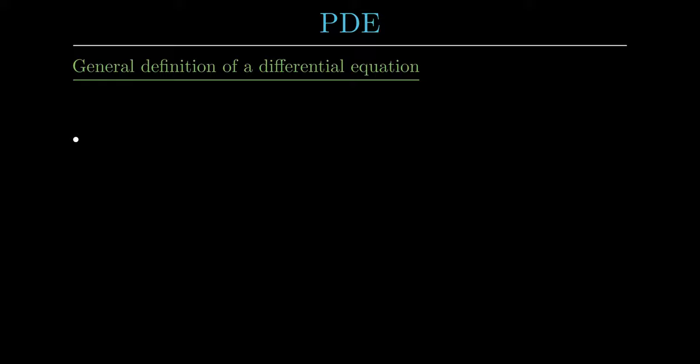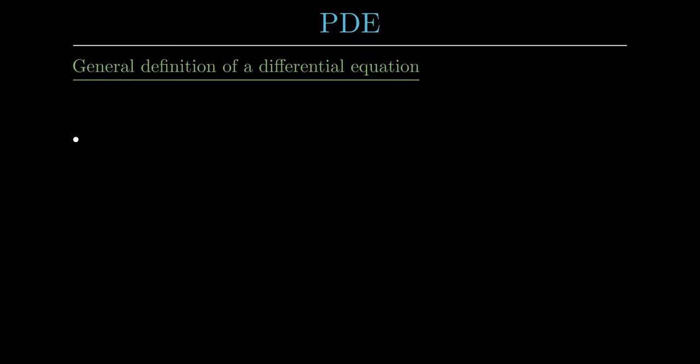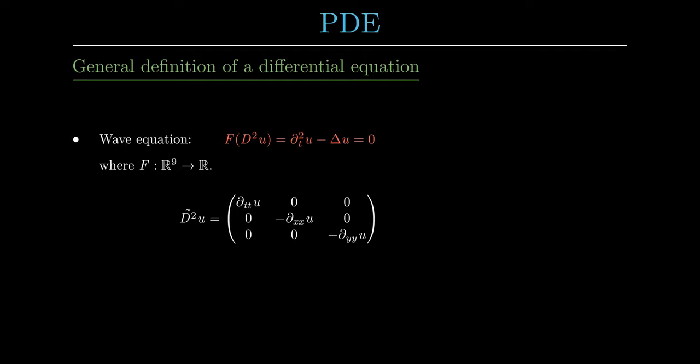The third important PDE is the wave equation. Here, in contrast to the heat equation, we now have a second time derivative of u inside the function f. Therefore we now have a contribution of the second time derivative of u in the modified Hessian matrix.